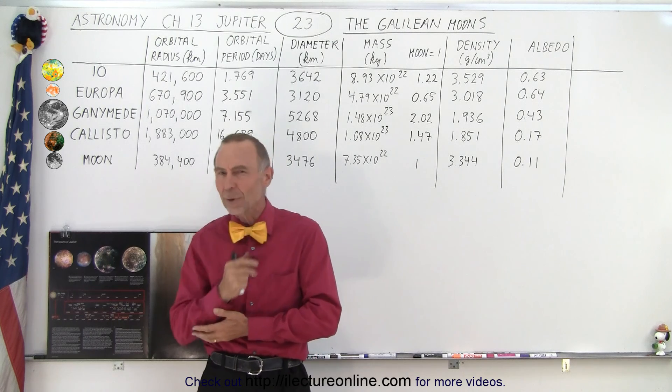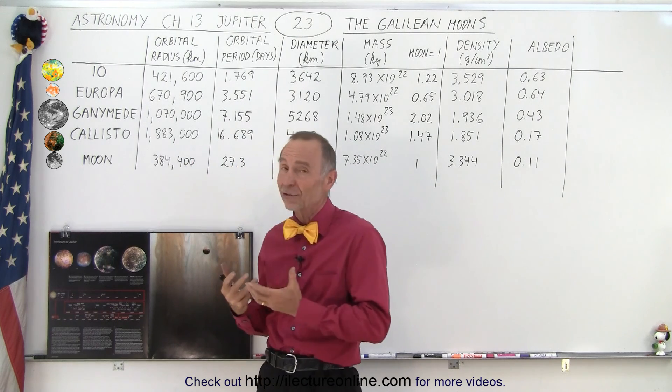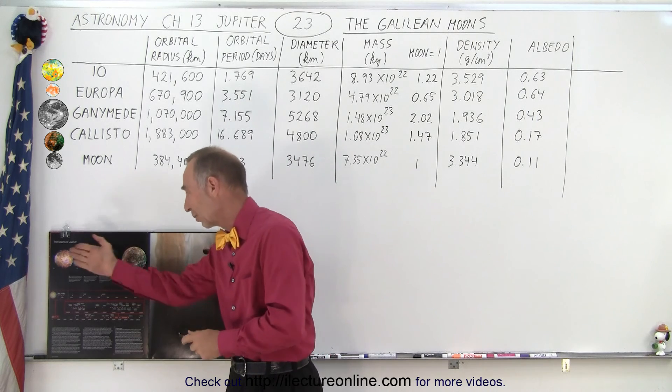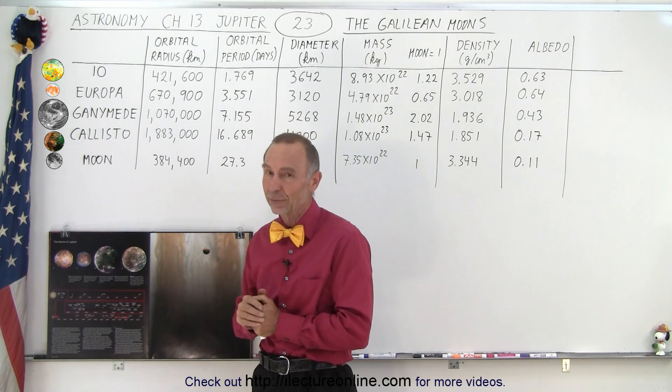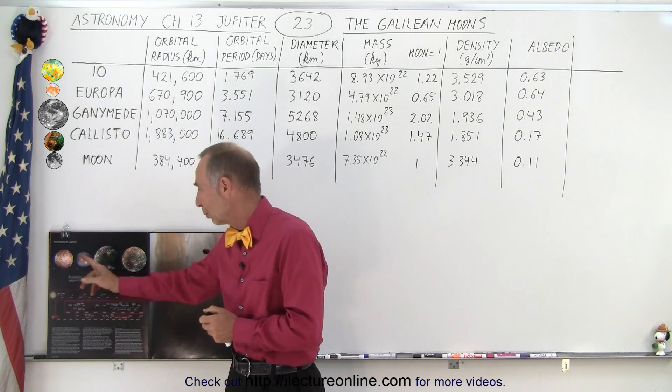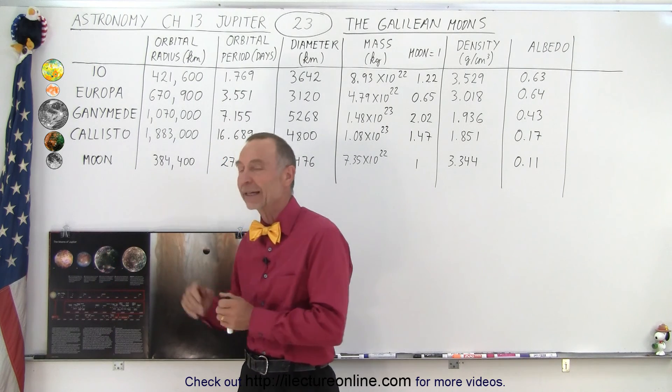But now that we have satellites and very nice telescopes, we're able to take very nice close-up pictures of the four moons. So we have Io, Europa, Ganymede, and Callisto.